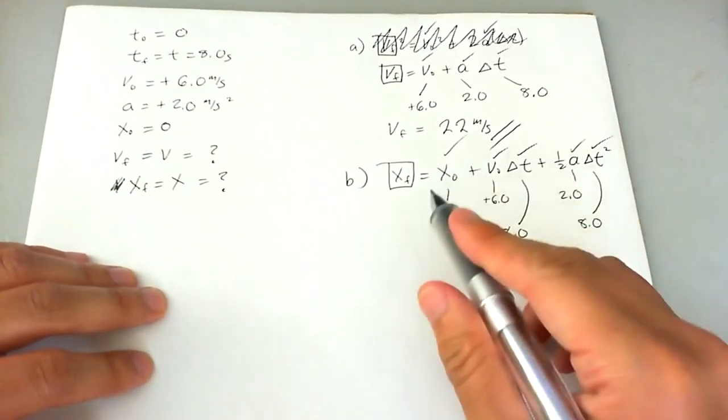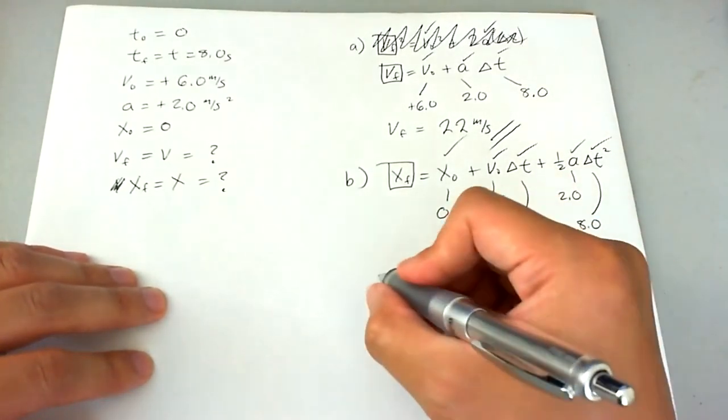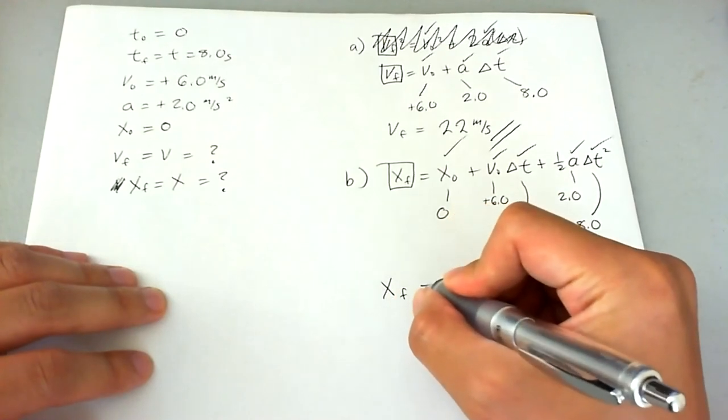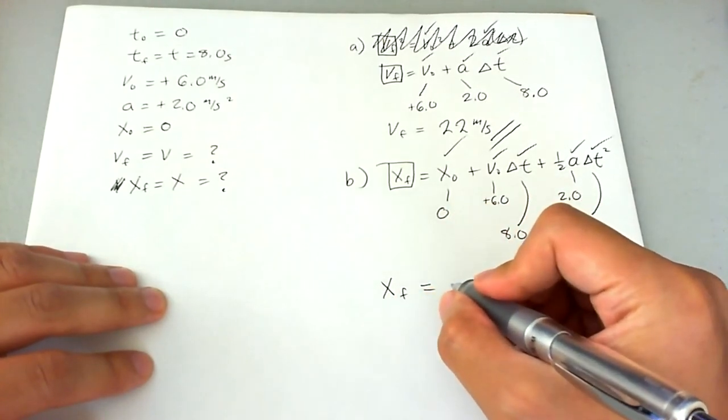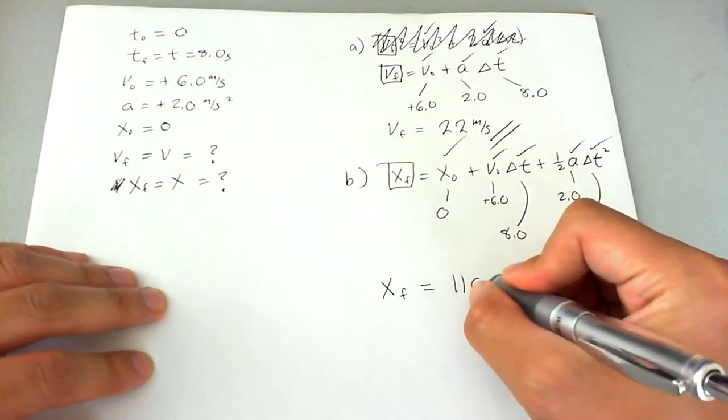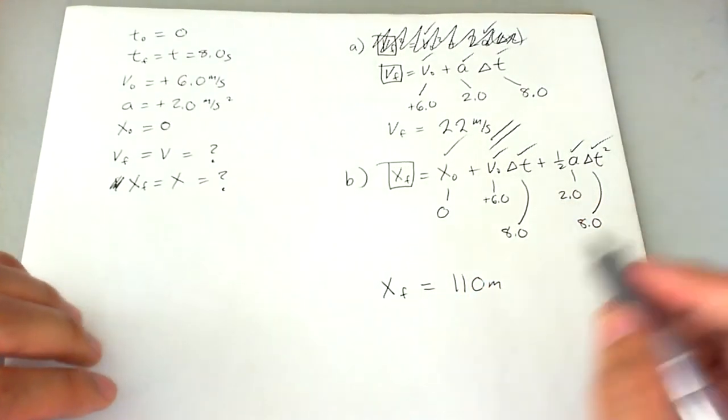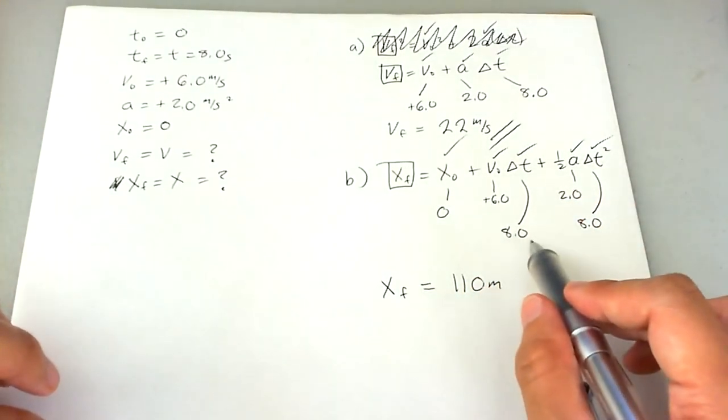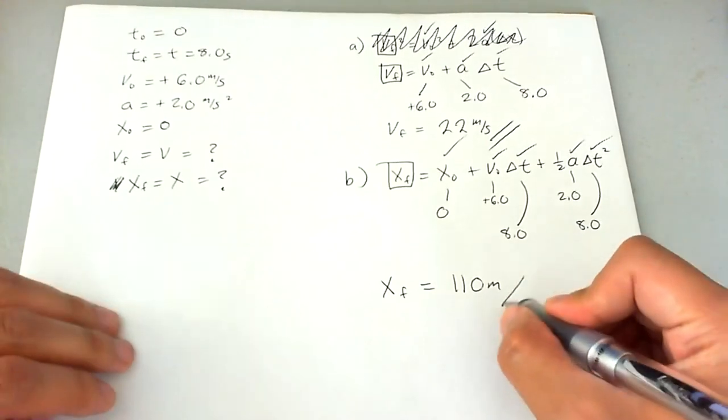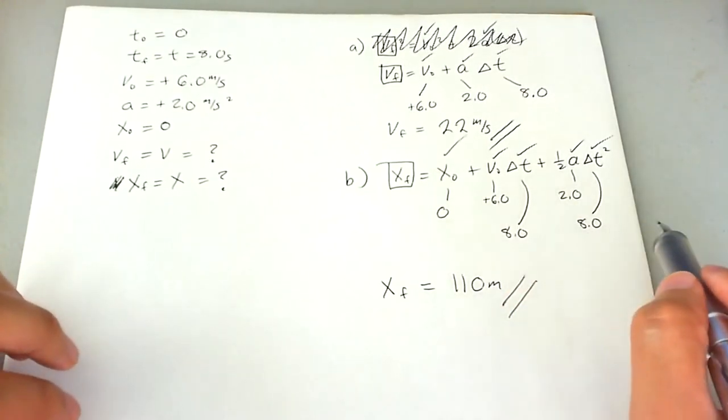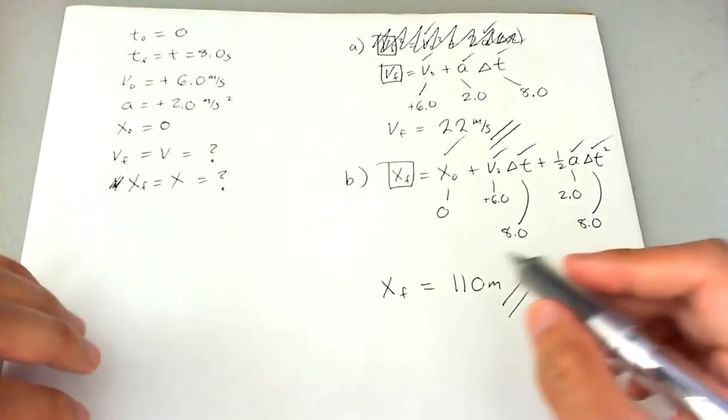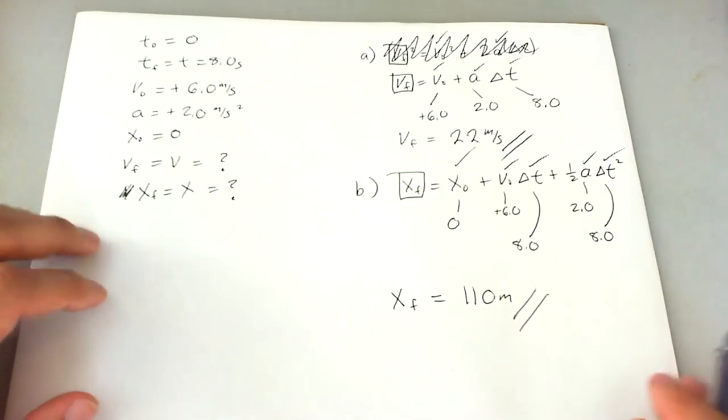If you plug and chug, which is basically what this problem is asking you to do, you're going to go ahead and get final displacement to be a hundred and I think 12 meters, but we round it down to 110 because of the significant figures. Now, if you want to say the 112 instead, that's totally fine for this class, at least. So we're basically done with this problem.